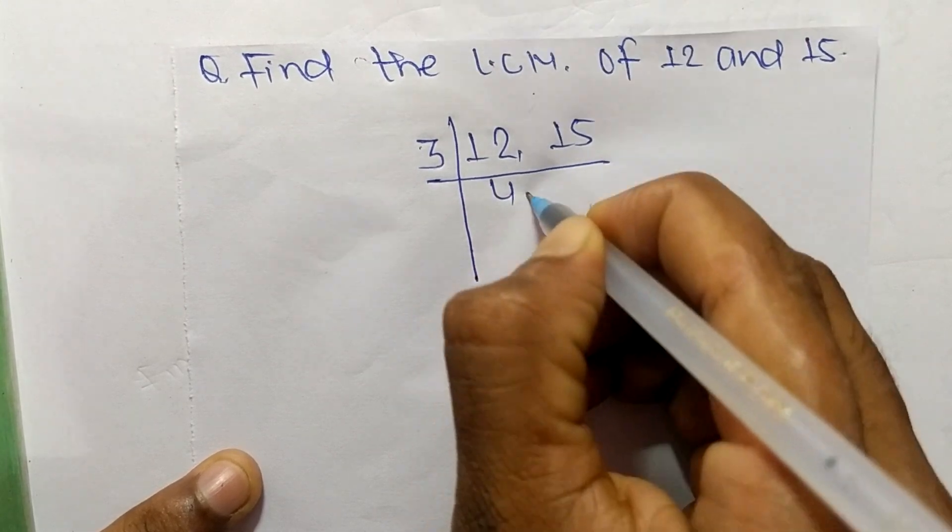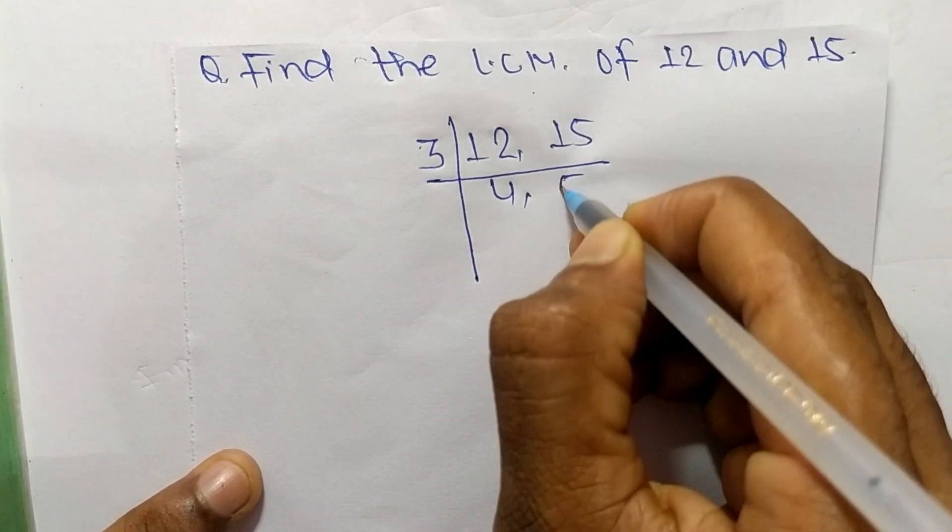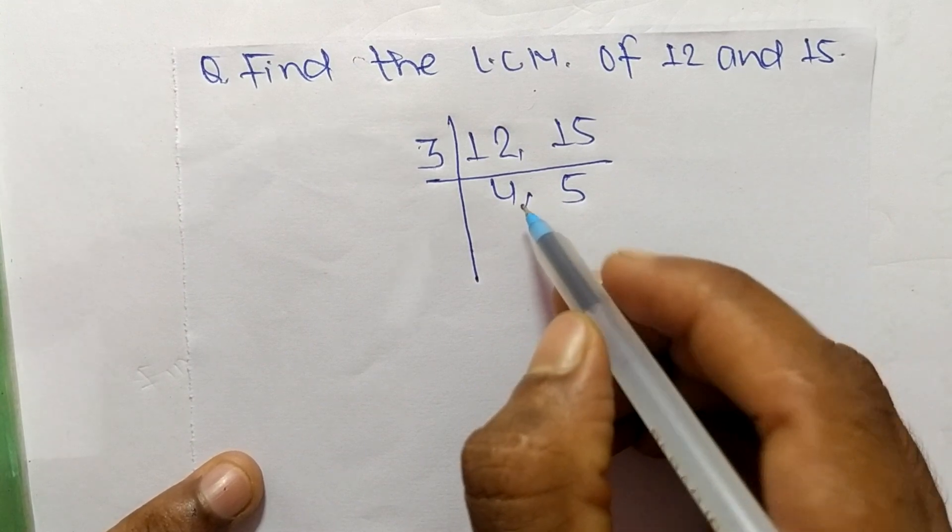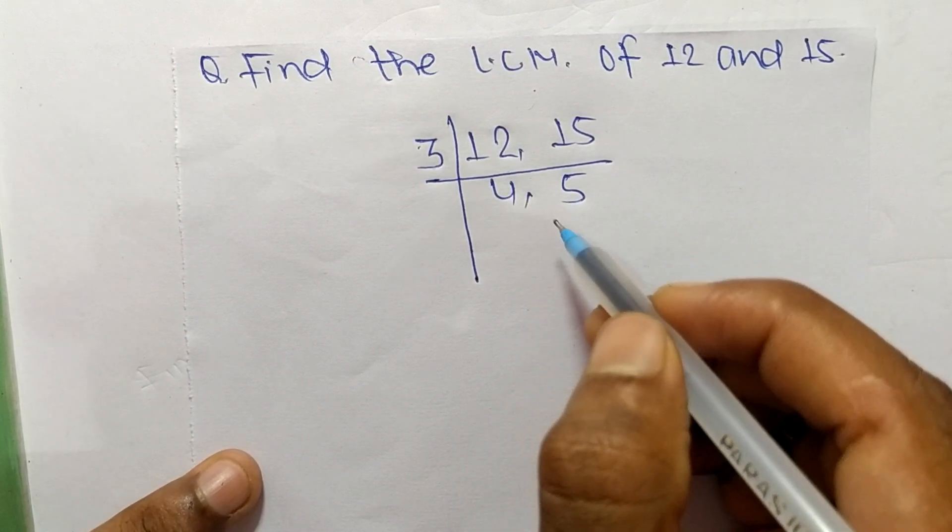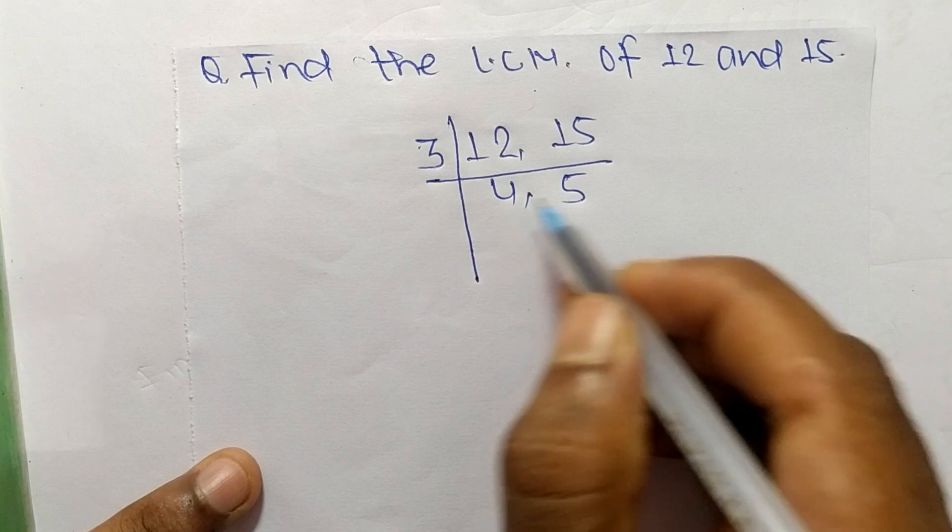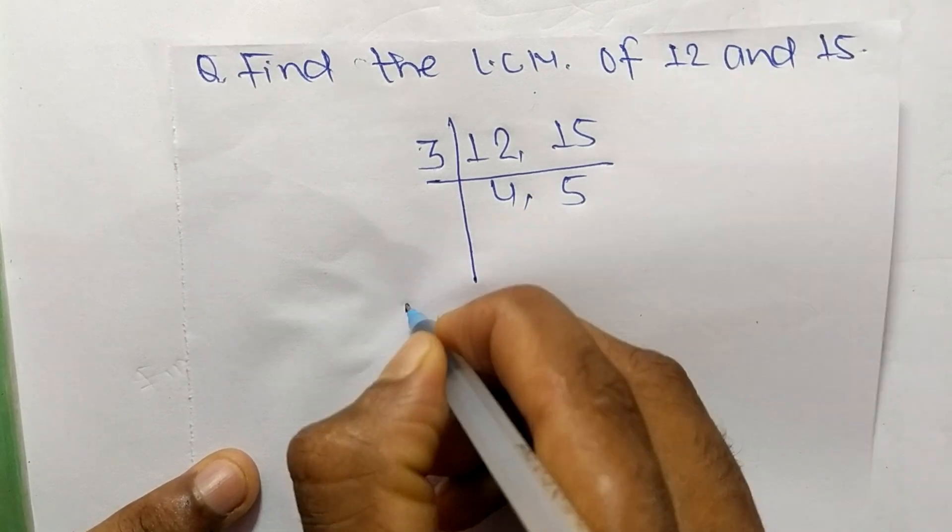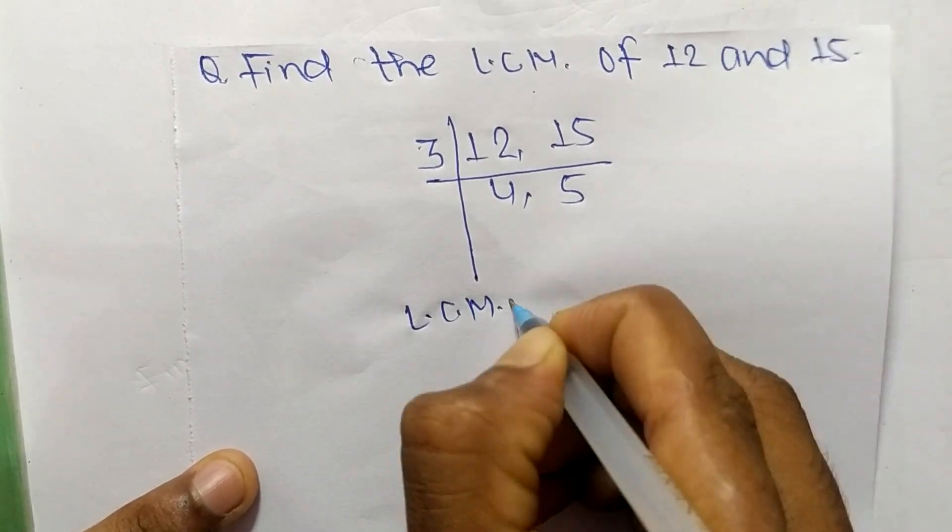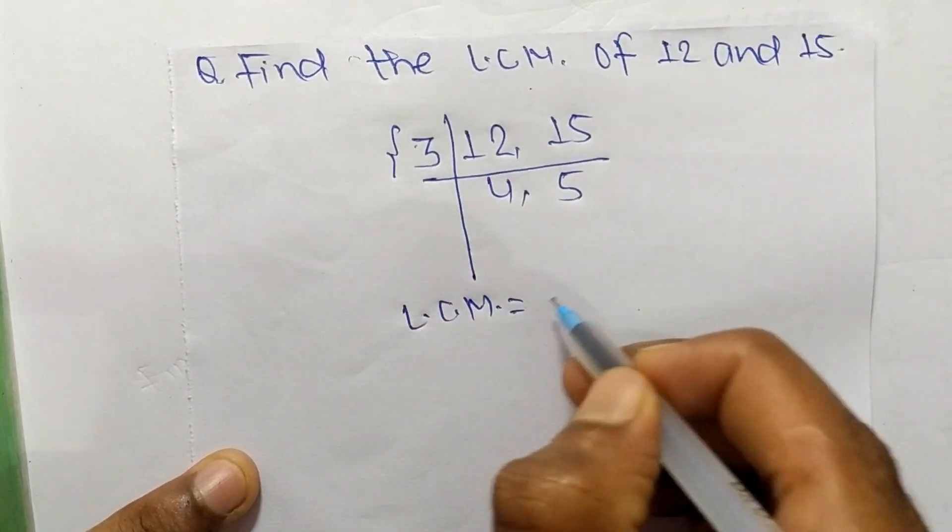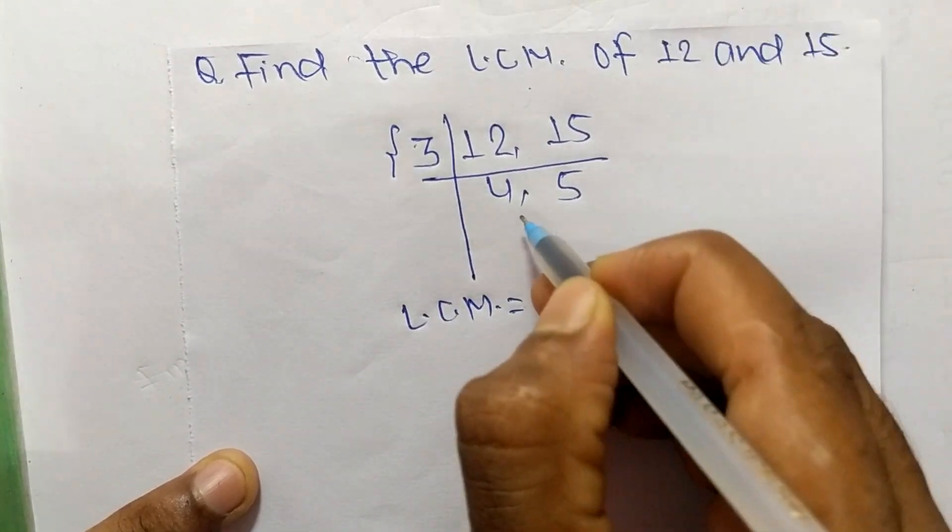So 3 times 4 means 12 and 3 times 5 means 15. So now we get here 4 and 5 which are not exactly divisible by the same number. So its LCM is equal to, from this part it is 3, and from this part it is 4 times 5.